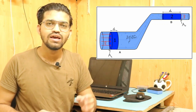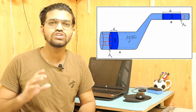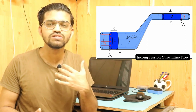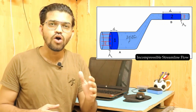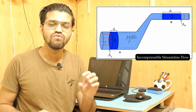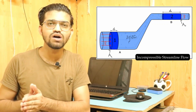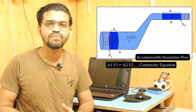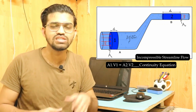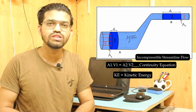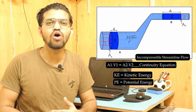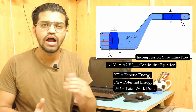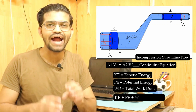Consider a pipe with section A having the largest cross-sectional area and section B having a smaller one. An incompressible fluid with zero viscosity flows through this pipe. The amount of fluid passing through section A equals the amount passing through section B — that is the continuity equation. Going beyond continuity, Bernoulli's principle states that the sum of kinetic energy, potential energy, and work done at section A will equal the same sum at section B — it remains constant across all cross-sections.